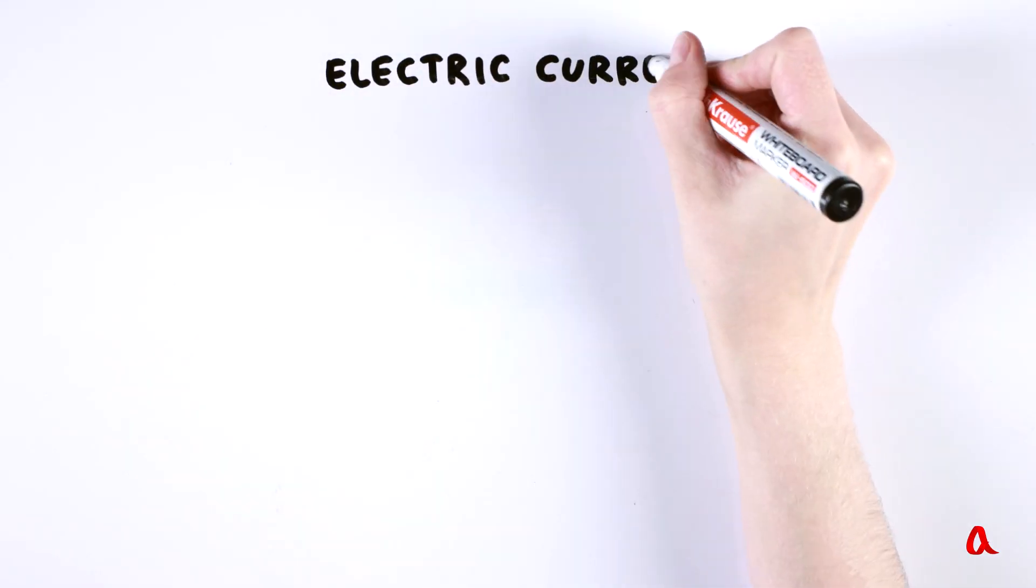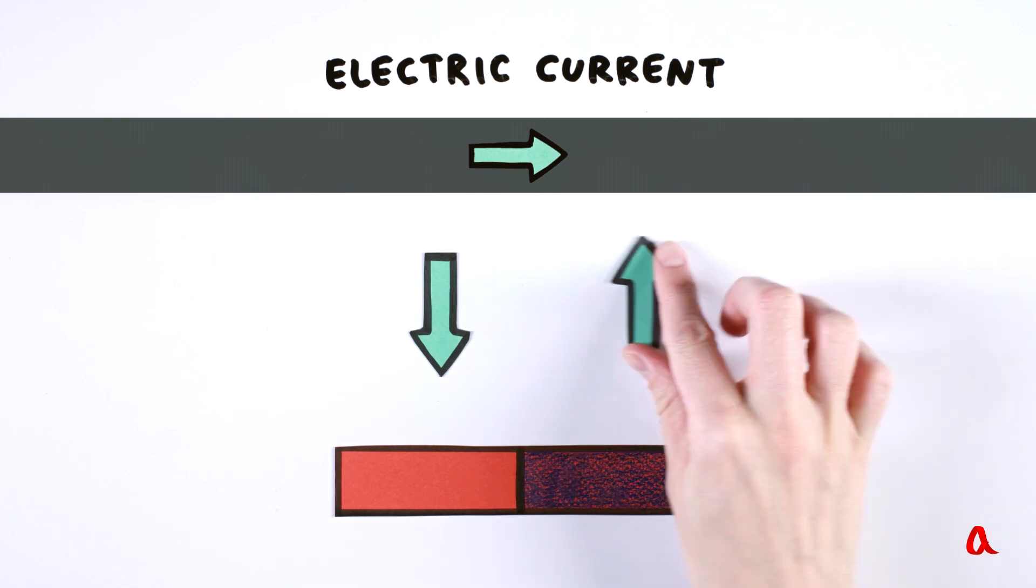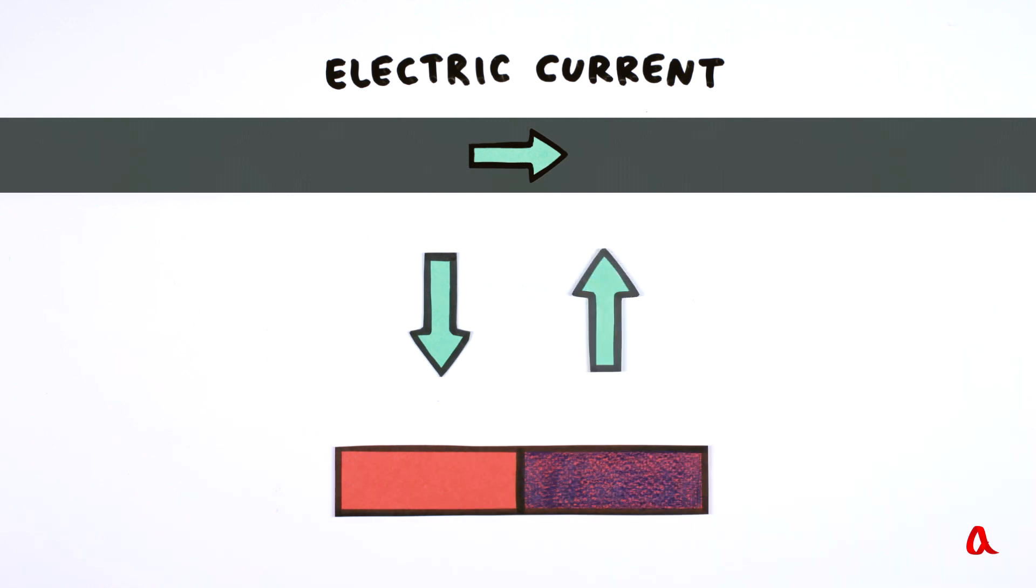From our Oersted experiment, it was known that an electric current acts on a magnetic needle, causing it to turn. But then, according to Newton's third law, the magnetic needle must also act on the wire with a current.